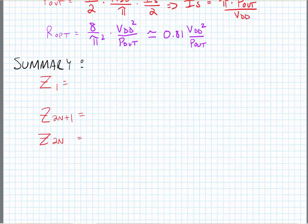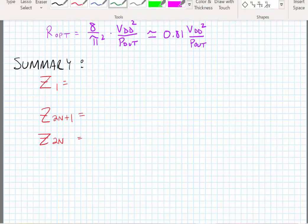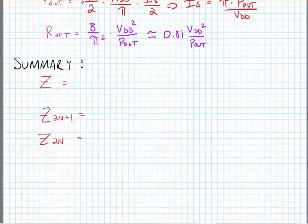A summary for this lesson: we know what the optimum termination resistance is for the amplifier. We'll call this Z1: 8/π² times VDD²/Pout. For all odd harmonics, we have a desired termination resistance of infinity. For all even harmonics, we have a desired termination resistance of 0 ohms.